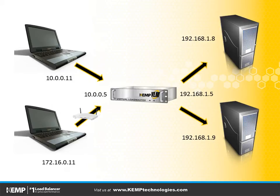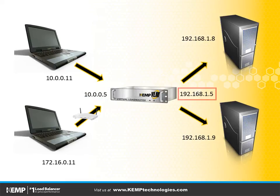In contrast, the two ARM configuration is where you have virtual services running on a different IP than the IP address that's used for connecting to the servers. So notice here, the virtual service remains the same 10.0.0.5 as we discussed previously. But the interface on the Kemp Loadmaster is 192.168.1.5 for the servers, so that it can connect to the subnet that the servers are on.